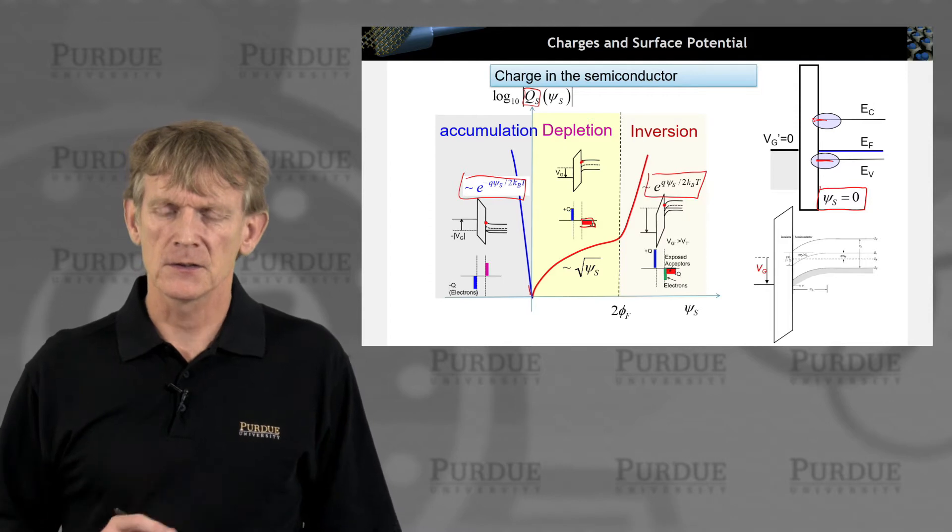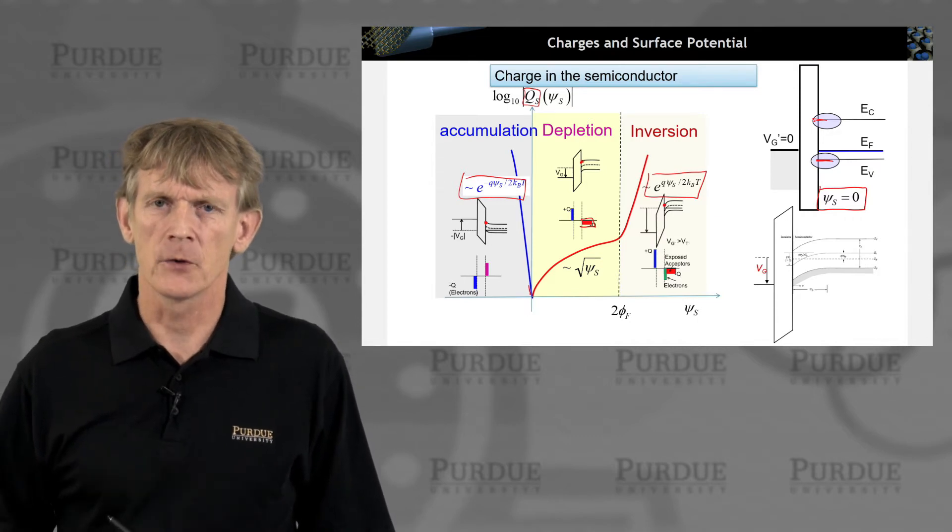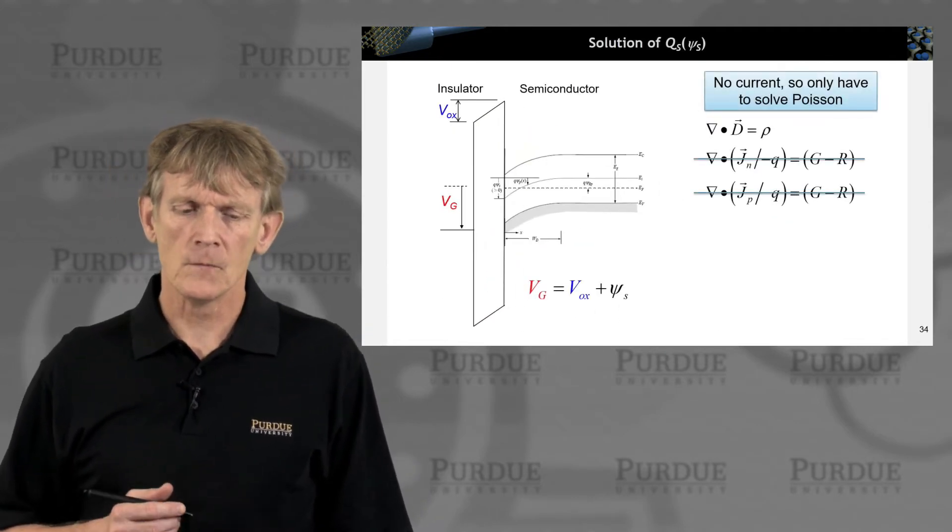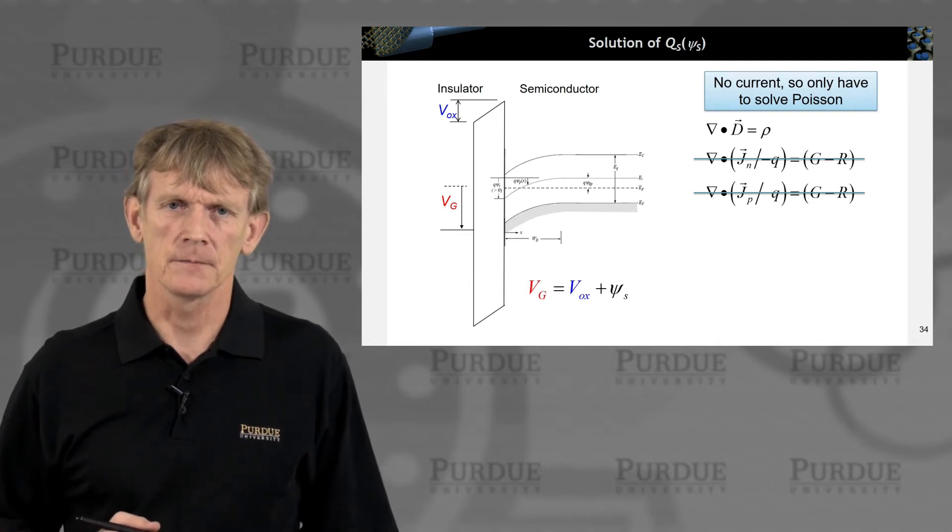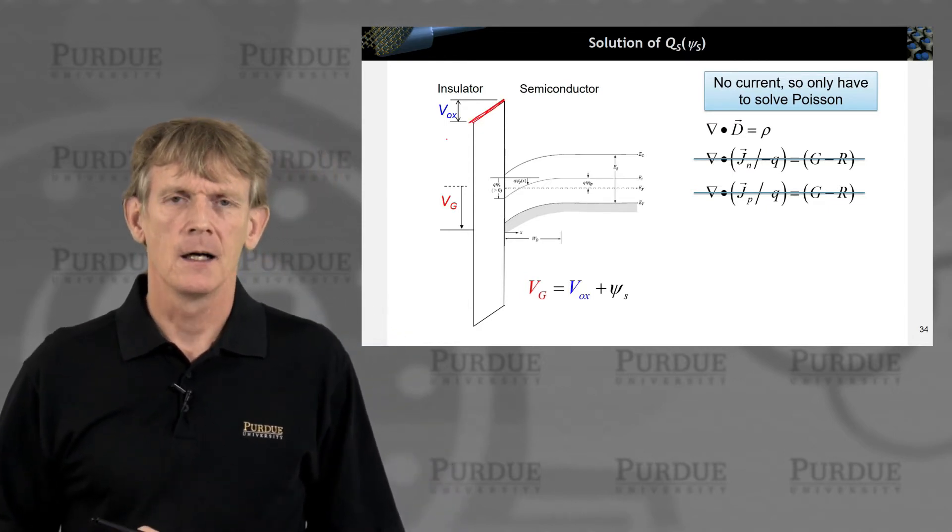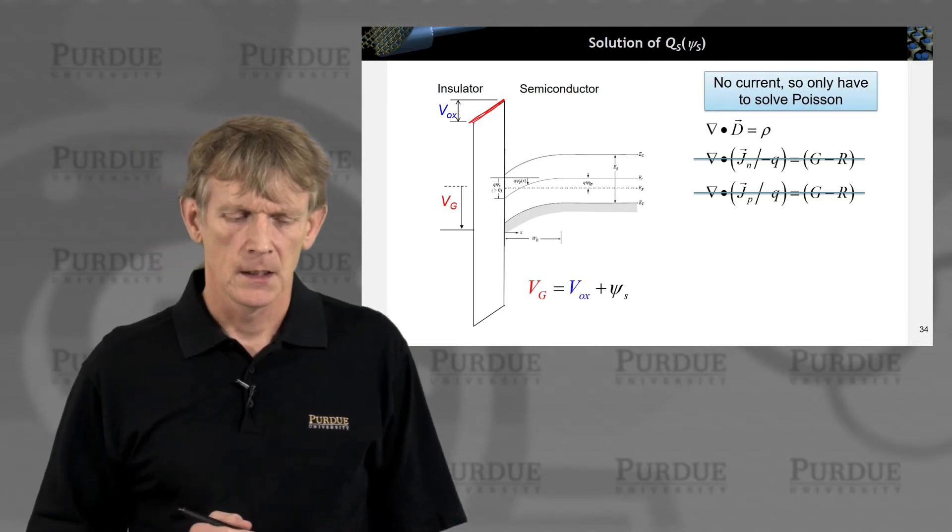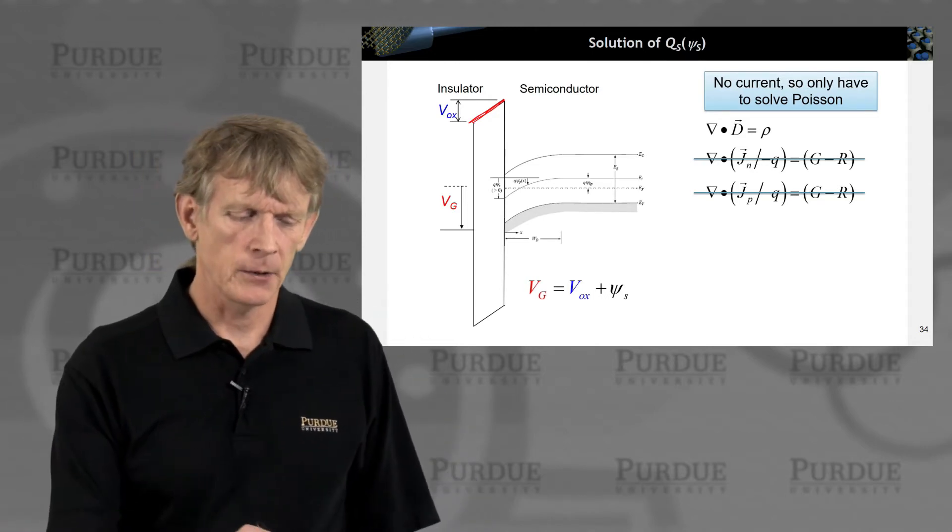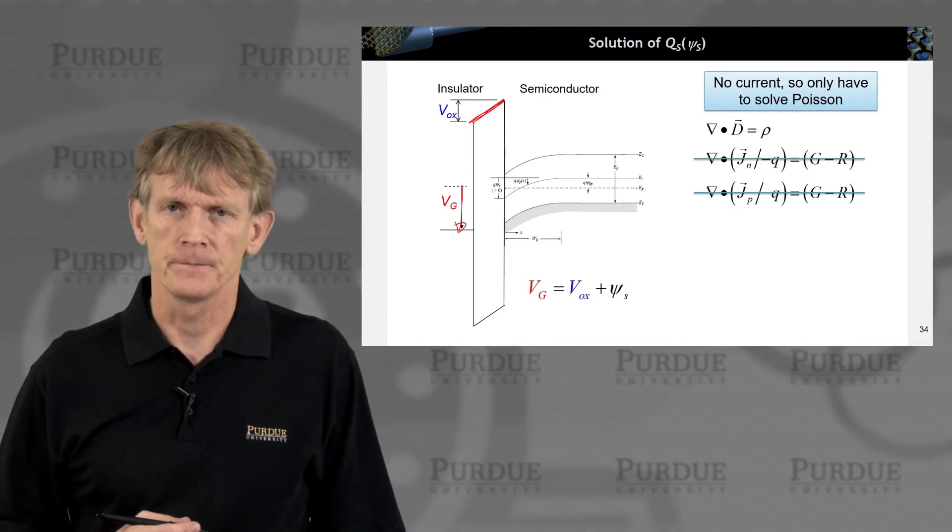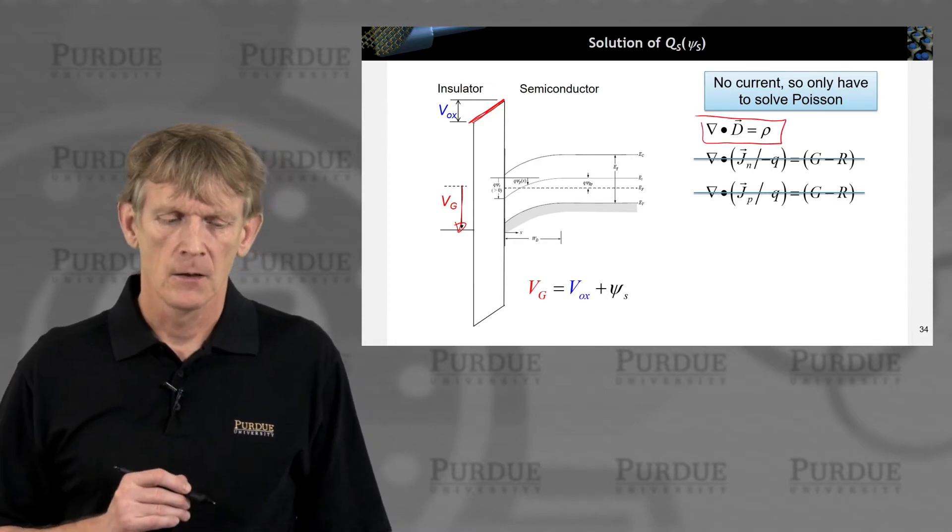So this is again the sketch of the band edge diagram close to inversion, and we'll explore a little bit here around that point. So we want to solve the charge in the semiconductor. Again, as a reminder, the potential here is dropping off linearly. The electric field is constant. So we are applying a gate voltage, and we're applying it this way, where we're driving the system either in depletion or even higher into inversion. We won't have current, and we will just solve Poisson equation like this.